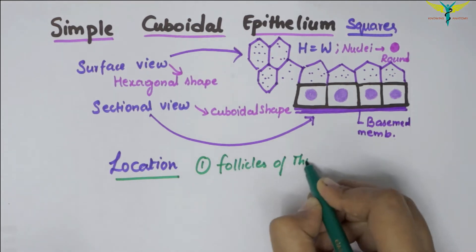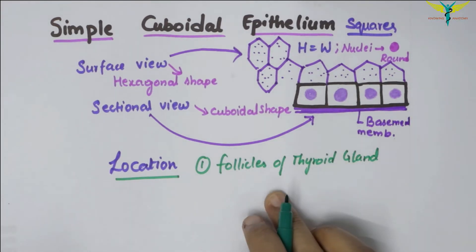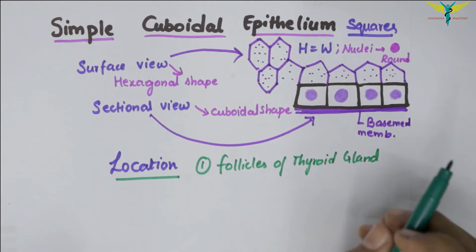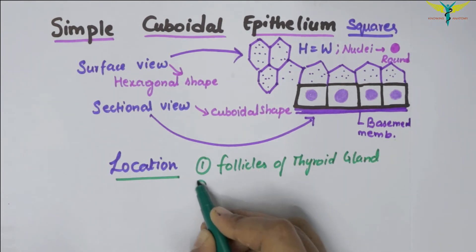These are seen in the follicles of thyroid gland. For a video on histology of thyroid, you can click on the I button. These are present in the ducts of many glands.